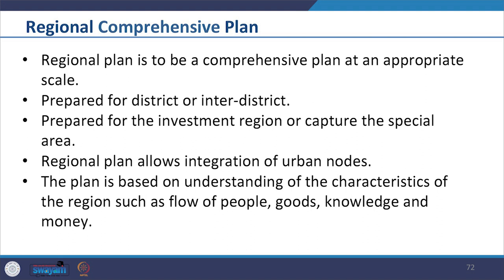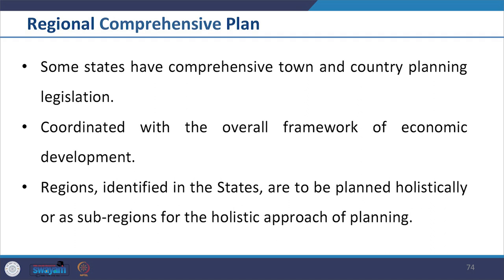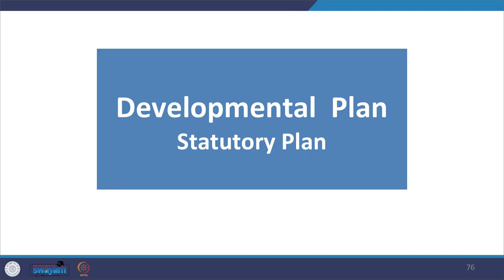The plan could be prepared for a district, inter-district, investment region, or special area. It should allow integration of urban nodes with semi-urban and rural areas, and is based on understanding the characteristics of the region such as flow of people, goods, knowledge and money. Some states have comprehensive town and country planning legislation which provides for urban planning and development in a regional perspective, coordinated with the overall framework of economic development, priorities and resource availability.